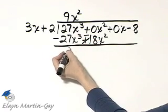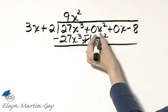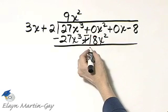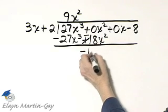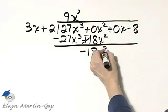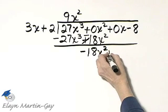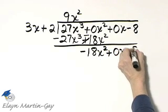And now 27x cubed minus 27x cubed, that's 0. Then 0x squared minus 18x squared, that's negative 18x squared. I'll write down my other terms, plus 0x minus 8, and let's do the process again.